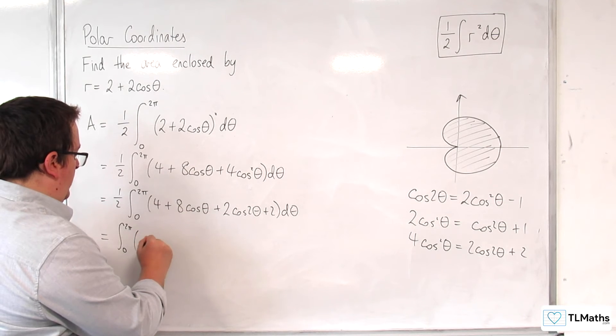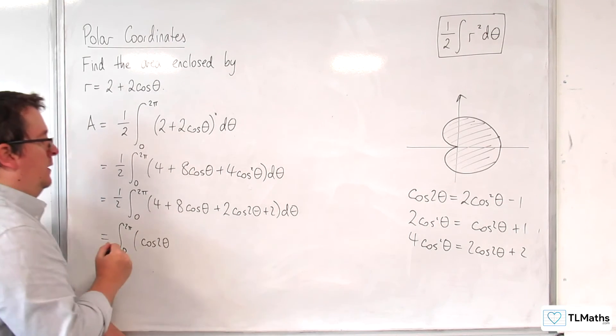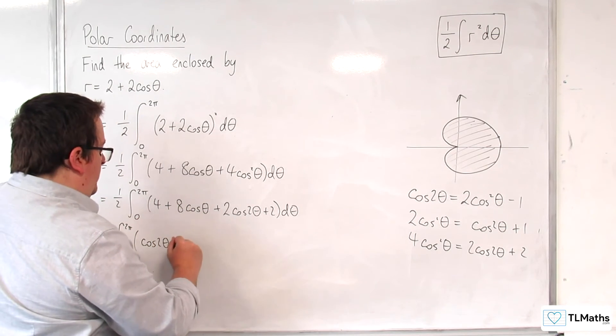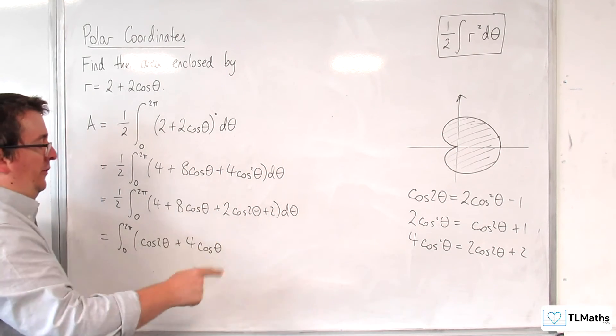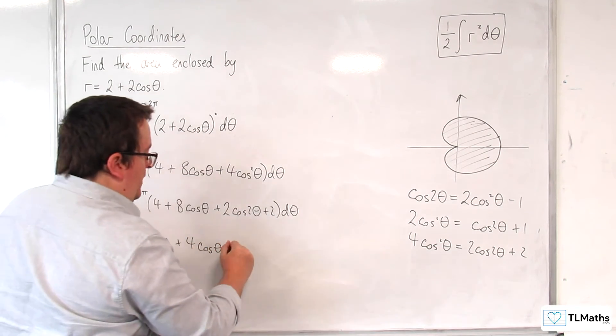We've got the cosine 2 theta. We're going to have 4 cosine theta. And I've got the 4 plus 2 is 6. I've factored out the 2, so I've got now plus 3.